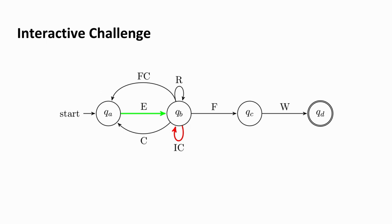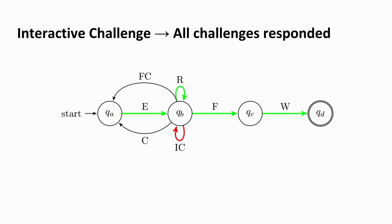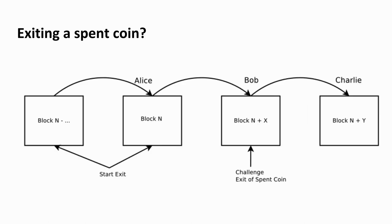In the other unhappy case there is an interactive challenge. Alice exits, somebody makes an interactive challenge — 'IC' means interactive challenge — and if Alice does not respond within a predefined time period, the coin goes back to the deposited state. But if all challenges are responded to and after seven days there are zero outstanding challenges ('R' means respond), the coin can finally settle as normal. The most straightforward situation is when Alice has a coin, spends it to Bob, but also tries to exit it. What Bob must do, as the latest owner of the coin, is go to chain and say Alice spent the coin by showing a direct spend from Alice to Bob.